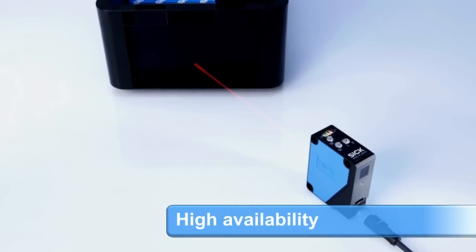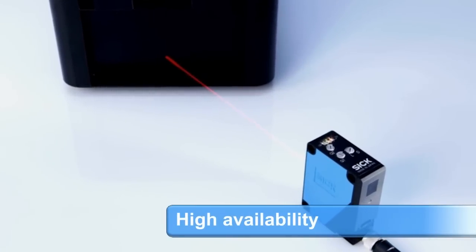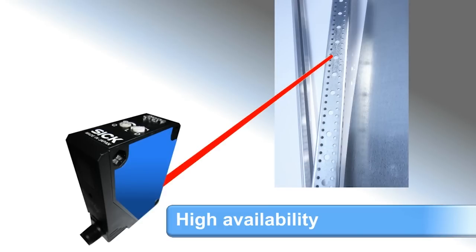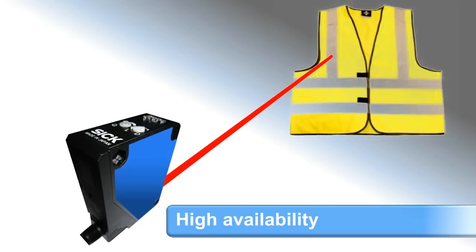Depending on the sensing distance and material, detection is assured even at an angle. The sensor ignores reflections from objects in the background, such as shiny metallic surfaces, windows, or safety vests.